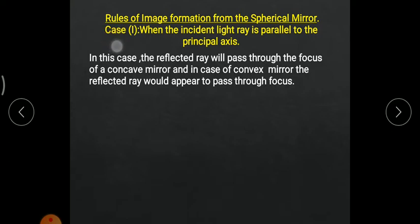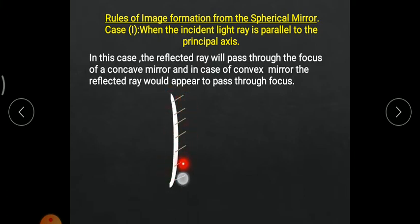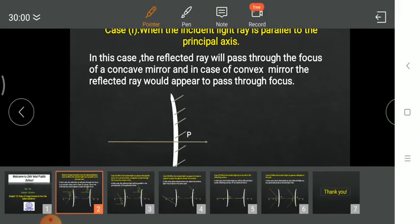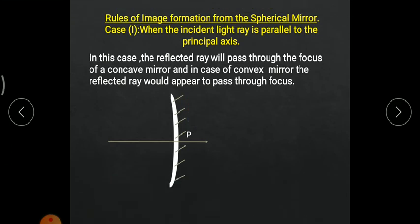The first rule says that when the incident ray is parallel to the principal axis. I am taking an example of a concave mirror. This is a concave mirror in which the outer portion is an opaque medium coated with silver and lead oxide, and the inner one is acting as a reflecting material. A straight line which passes through the concave mirror is known as the principal axis, and the exact center of this concave mirror is known as the pole, which is denoted by P.